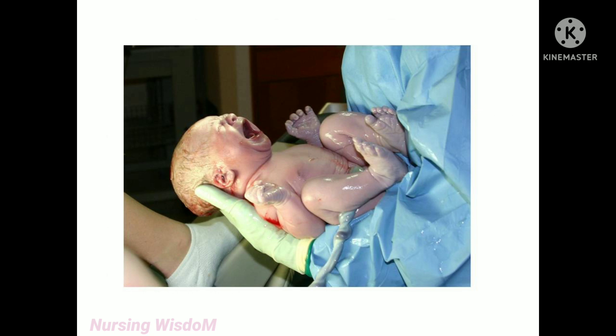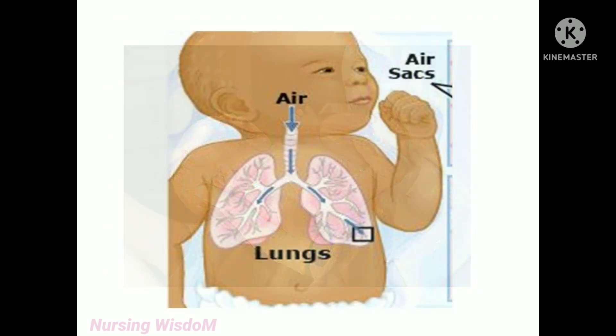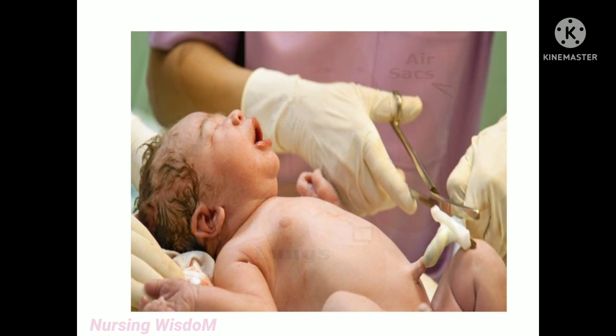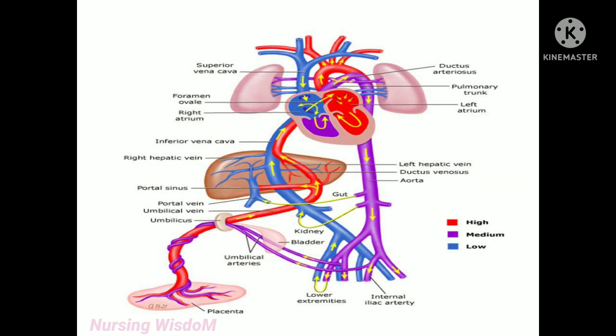After the baby is born, the baby will start to cry and breathe, so the lungs will expand and start to function. There is no more need for placental circulation, so we cut the umbilical cord. The umbilical cord contains the umbilical artery and umbilical vein. The umbilical vein takes blood from the placenta to the fetus, and the umbilical artery takes blood from the fetus to the placenta.